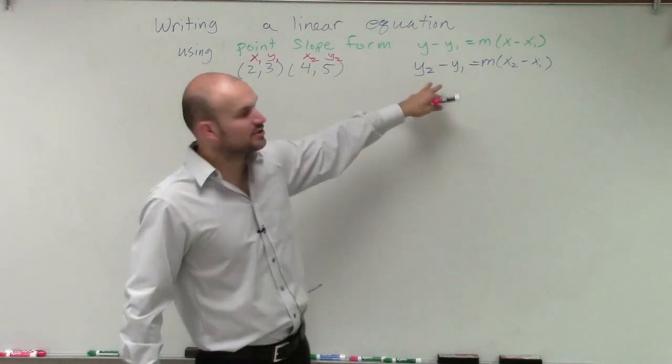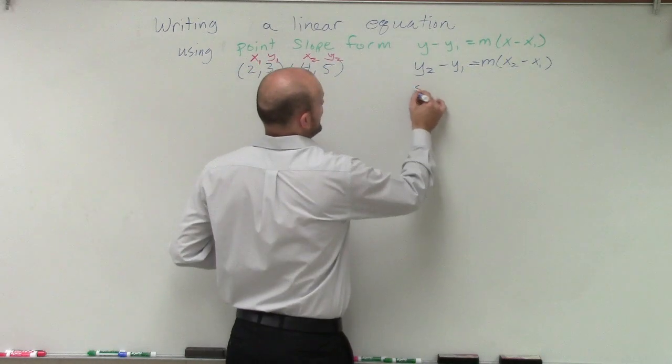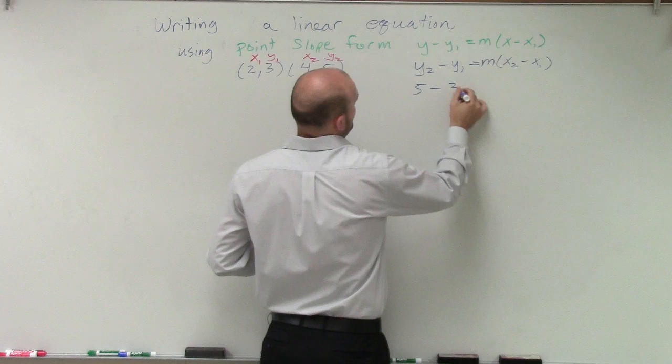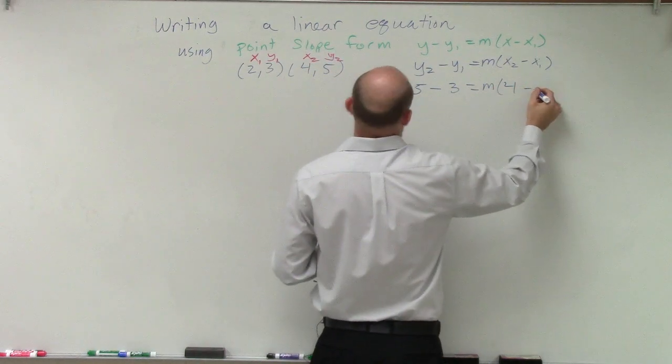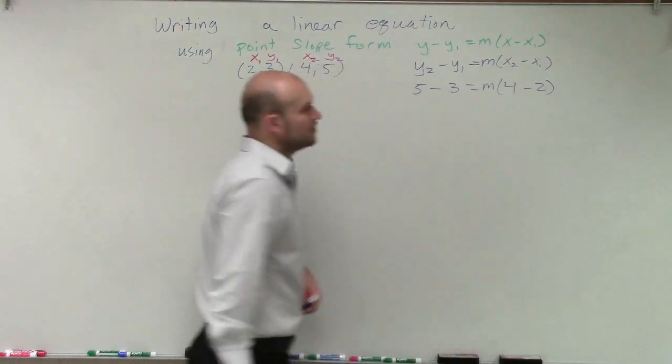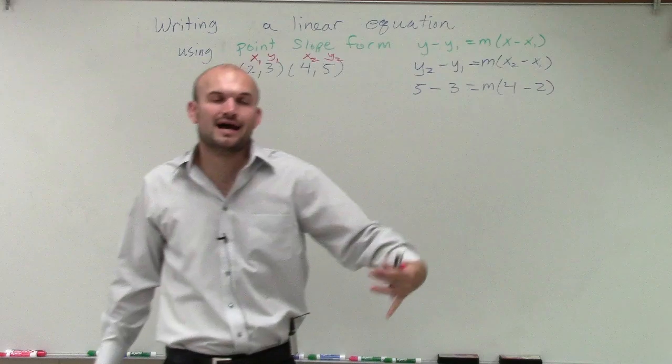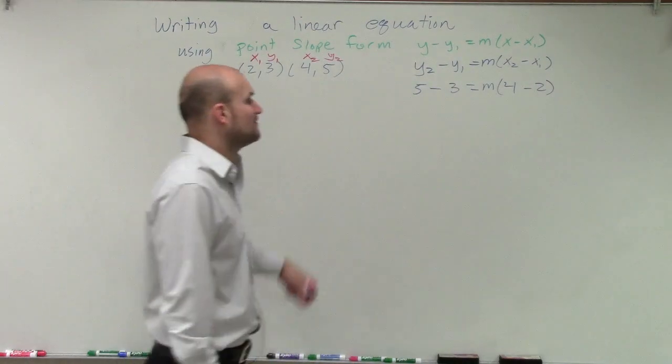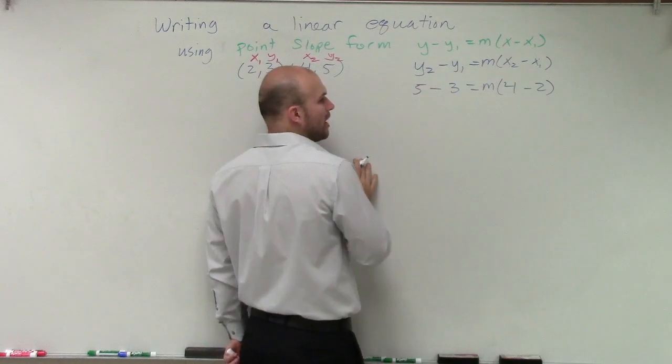Now the first thing I'm going to do is let's just plug them into the formula and see what happens. So if I'm going to plug them in, y2 is 5 minus y1, 3, equals m times x2 minus x1. So what you notice is by plugging them in, the only value that I have unknown is m. And remember, m is going to represent our slope for our equation or of our line. So therefore, by now plugging in both points, I'm now solving for our m.